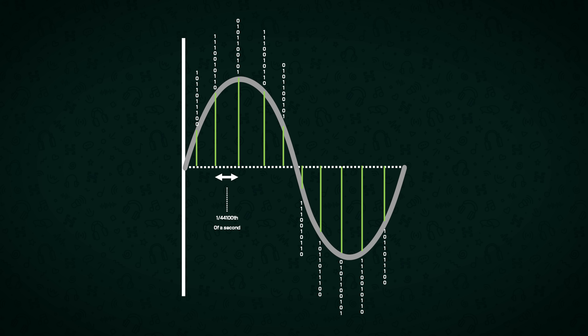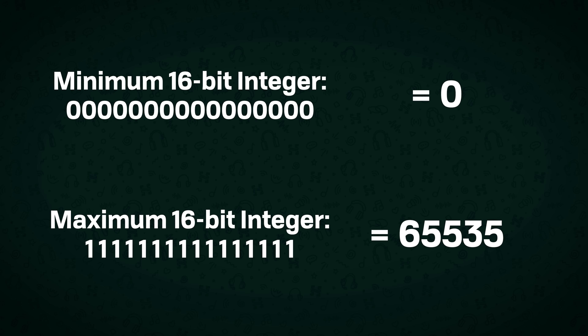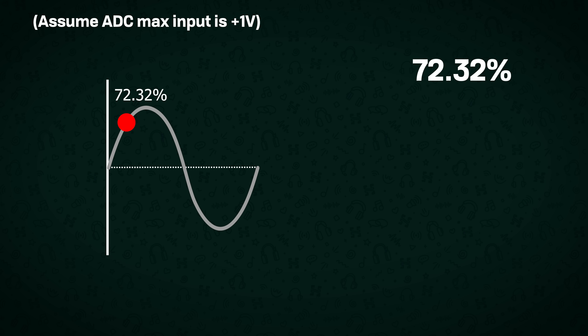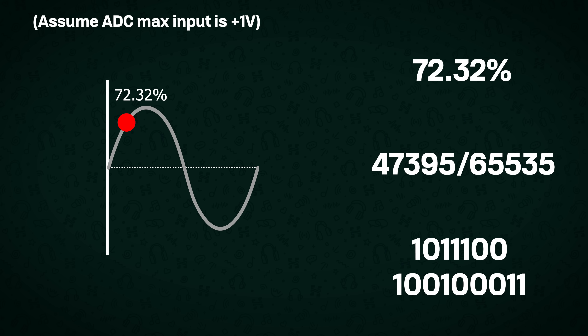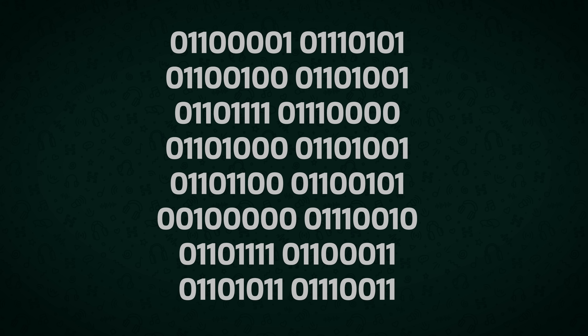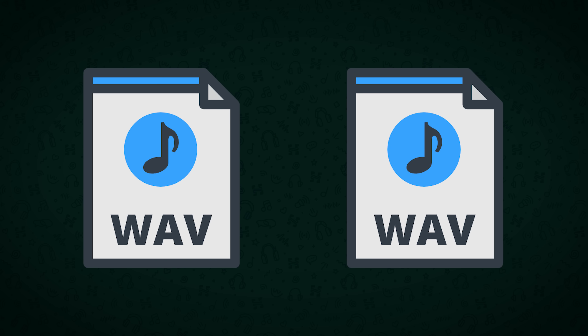Each of these individual figures can be stored as a binary value. Most music uses a bit depth of 16, meaning each of these samples has a 16-bit figure. A 16-bit integer can represent anything from 0 to 65,535, meaning we have 65,536 values we can represent the voltage with. So we can say that at this point in time the signal was 72.32% of the maximum value, or 47,395 out of 65,535 — which in binary is this. We do this repeatedly and get a series of values rather than a continuous analog signal, and we can copy, share, store and do anything we like with these binary values.